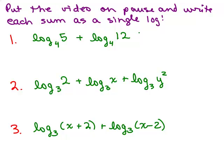All right, let's do the first one. So the log of this sum, I'm sorry, the sum of two separate logs is the same thing as the log base 4 of the product. So I have to do 5 times 12 to get 60 and I've written it as a single log.